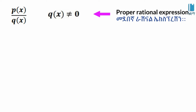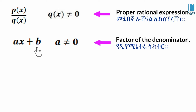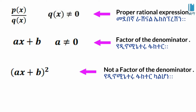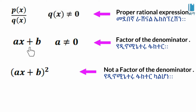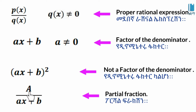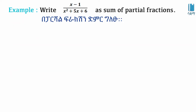The denominator includes linear expressions different from 0. The basic factor of the partial fraction is A over (ax + b), because it is a linear factor. Partial fraction decomposition of a linear factor.